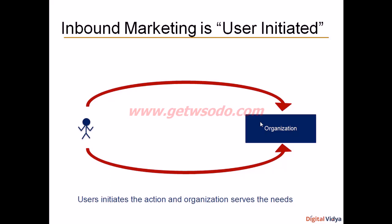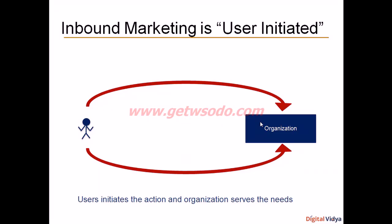When a person goes to Google and searches for something, he is initiating the action. After that, relevant content is displayed to him through SEO or SEM techniques. The user opts in for an email subscription and stays in touch with the organization through emails. The user subscribes to your social media communities — LinkedIn groups, Facebook groups, Twitter groups. The trigger point is always the user taking the first action.